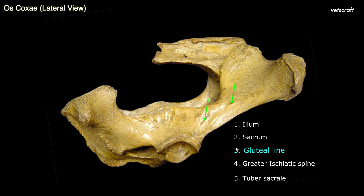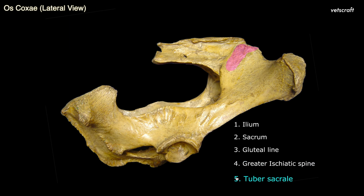These two oblique ridges, which the green arrow indicates, are the gluteal lines, which give origin for the middle gluteus. The greater ischiatic spine is formed by the ischiatic border of the ilium. It gives attachment to the sacrosiatic ligament. Tuber sacral is the internal angle of ilium and is situated below the level of the sacral spines.